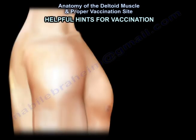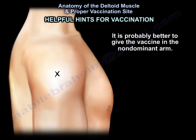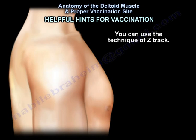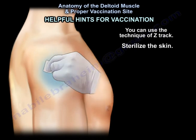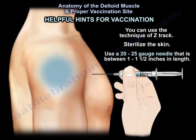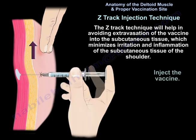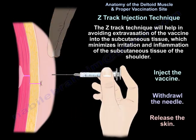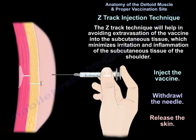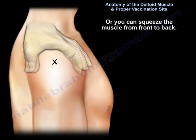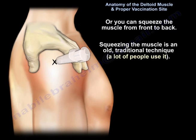Helpful hints for vaccination: it is probably better to give the vaccine in the non-dominant arm. You can use the Z-Track technique, sterilize the skin, and use a 20 to 25 gauge needle that is between 1 to 1.5 inches in length. The Z-Track technique helps avoid extravasation of the vaccine into the subcutaneous tissue, minimizing irritation and inflammation. Alternatively, you can squeeze the muscle from front to back — this is an older traditional technique that many people use.